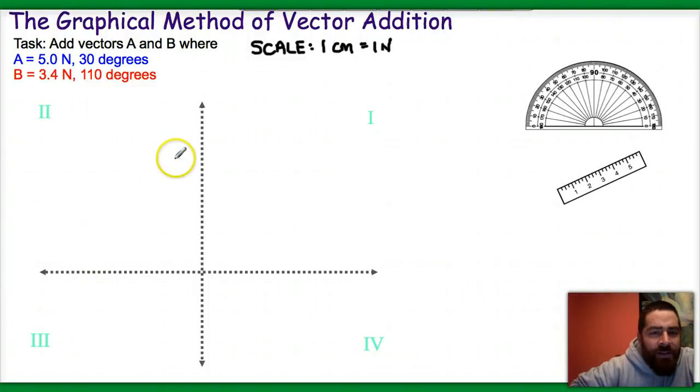Okay, let's take a look at the graphical method of vector addition. Notice that I've written a scale up here, one centimeter to one newton. The first thing you have to do when you're going to add vectors graphically is you have to represent them.